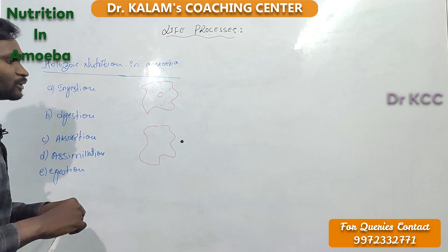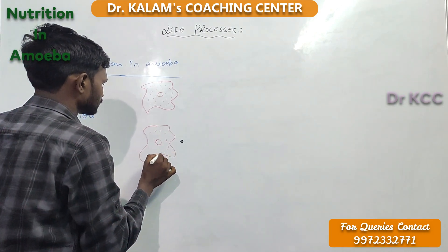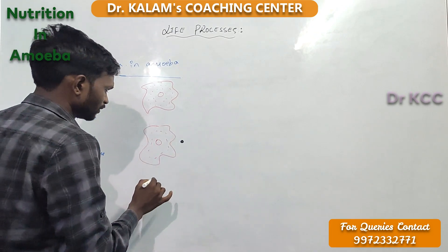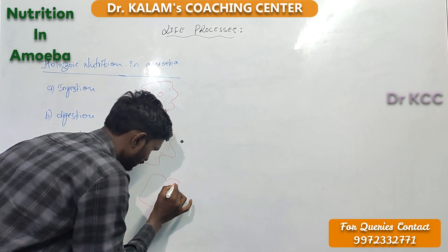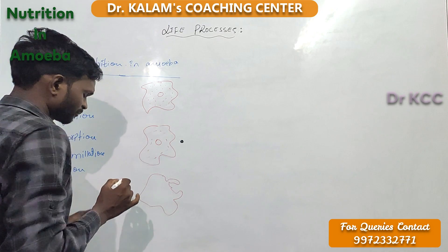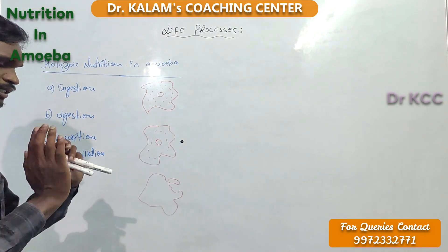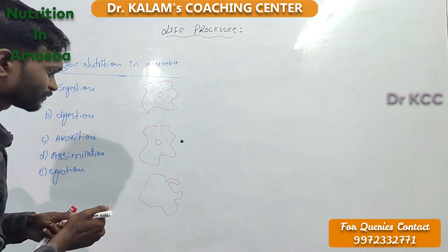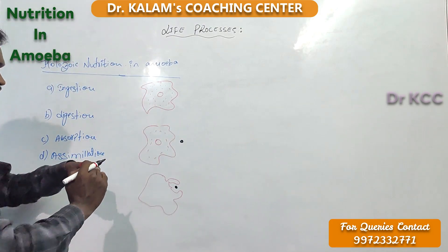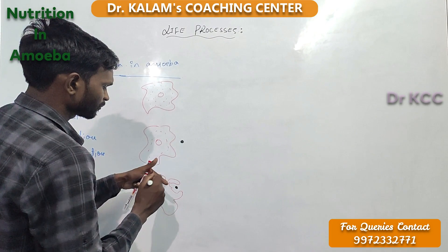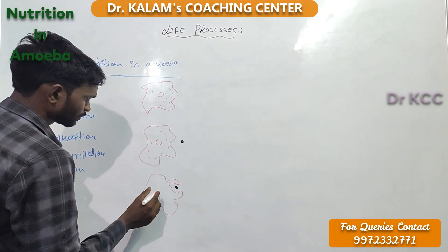Suppose this amoeba comes in contact with a food particle. Here is the food particle, and here is the amoeba with its nucleus, cytoplasm, and cell membrane. Whenever it comes in contact with a food particle, it forms something called pseudopodia. It extends its membrane to cover the food.